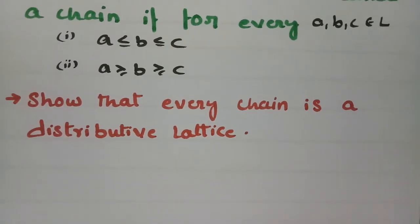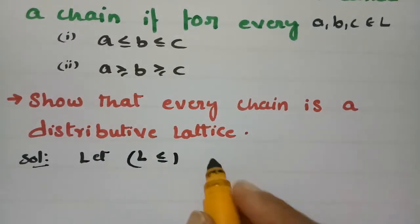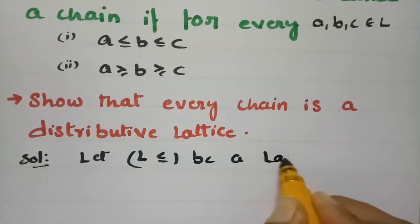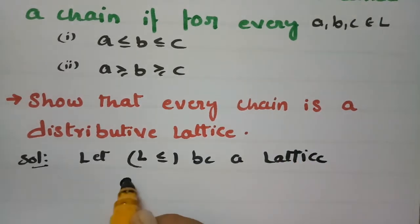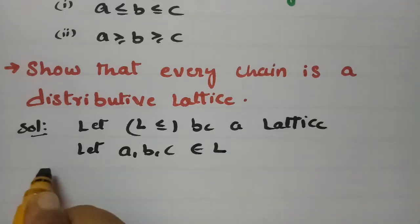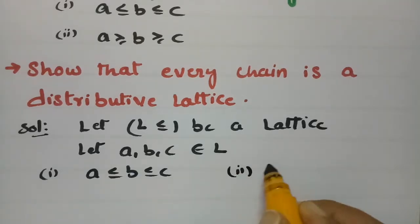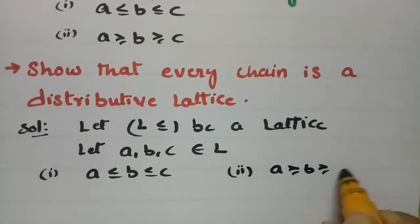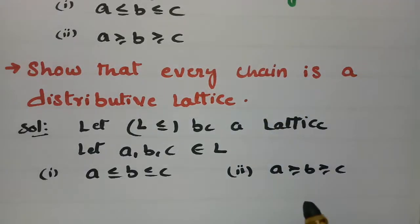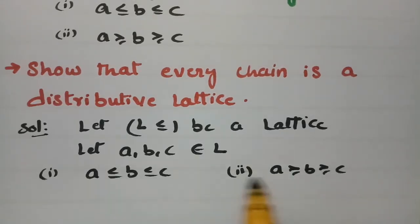We have two conditions for a distributive lattice. Let L (≤) be a lattice, and let A, B, C belong to L. Since it is given as a chain, according to the chain property we have two cases: Case 1 is A ≤ B ≤ C, and Case 2 is A ≥ B ≥ C. For these two cases, we have to show that L is a distributive lattice.